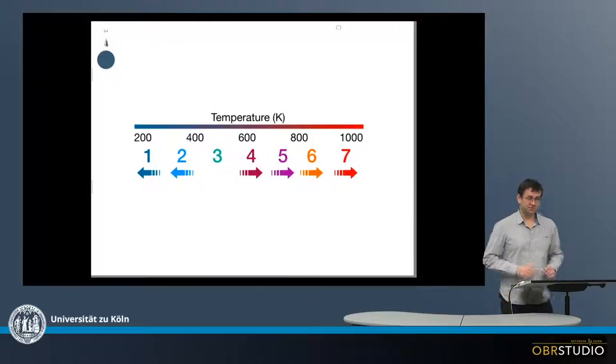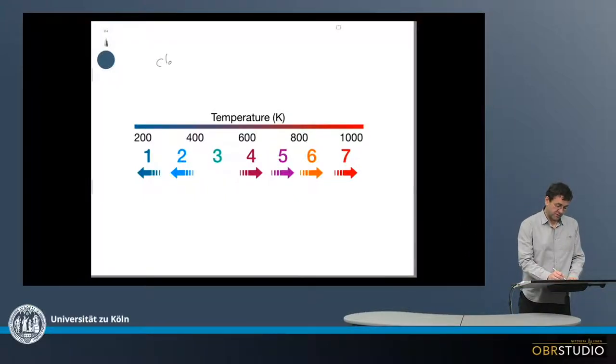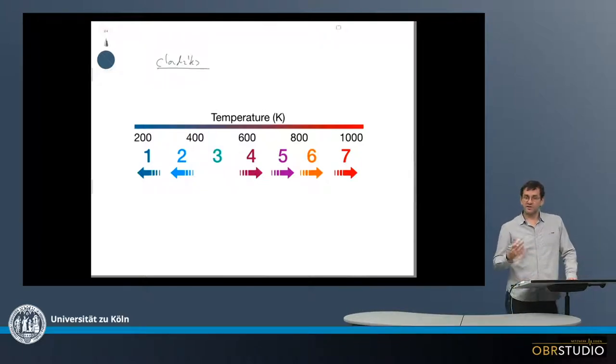The petrologic type is a classification scheme for chondrites to indicate whether they experienced some kind of secondary alteration on the parent body. So this is the petrologic type.